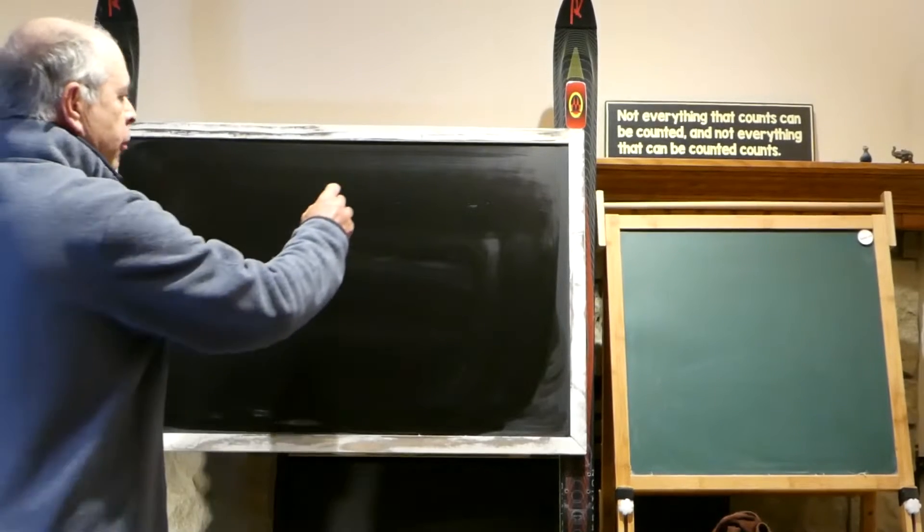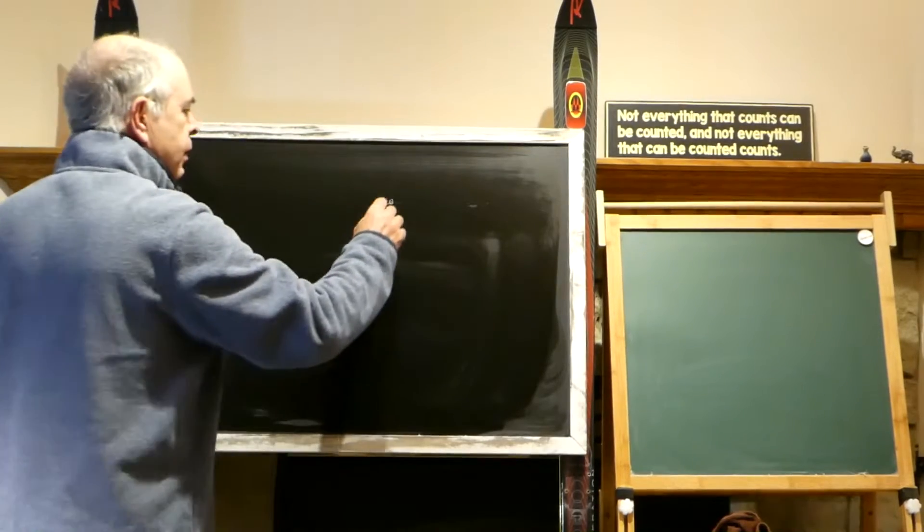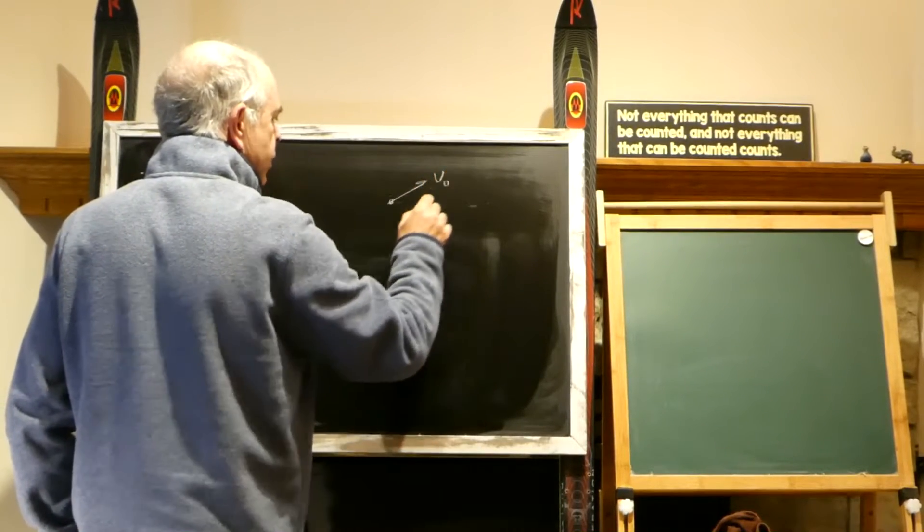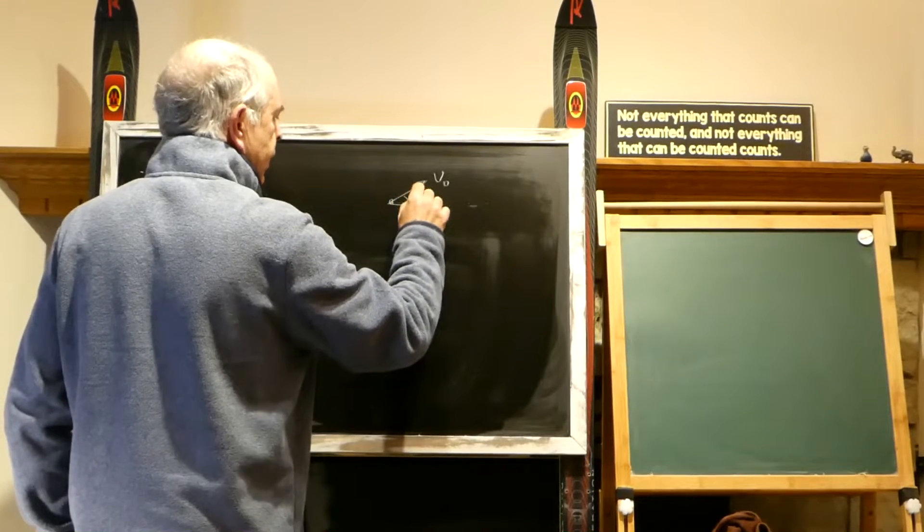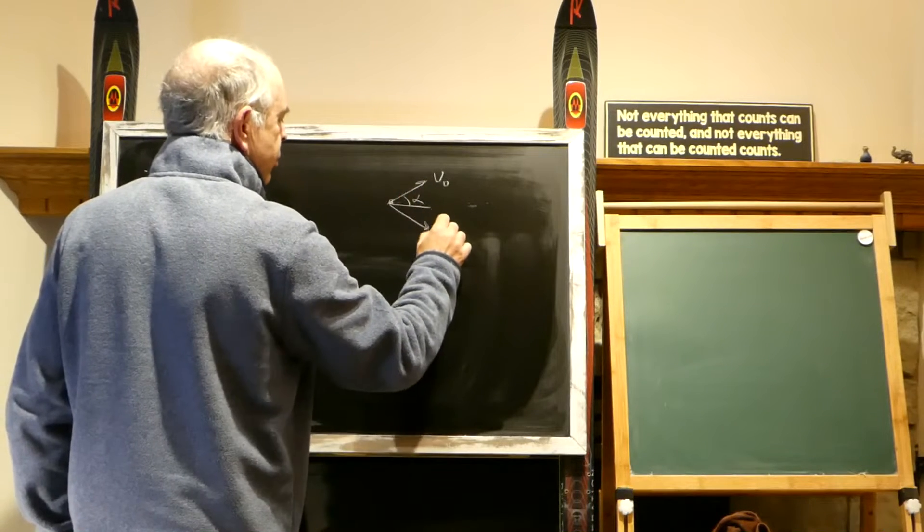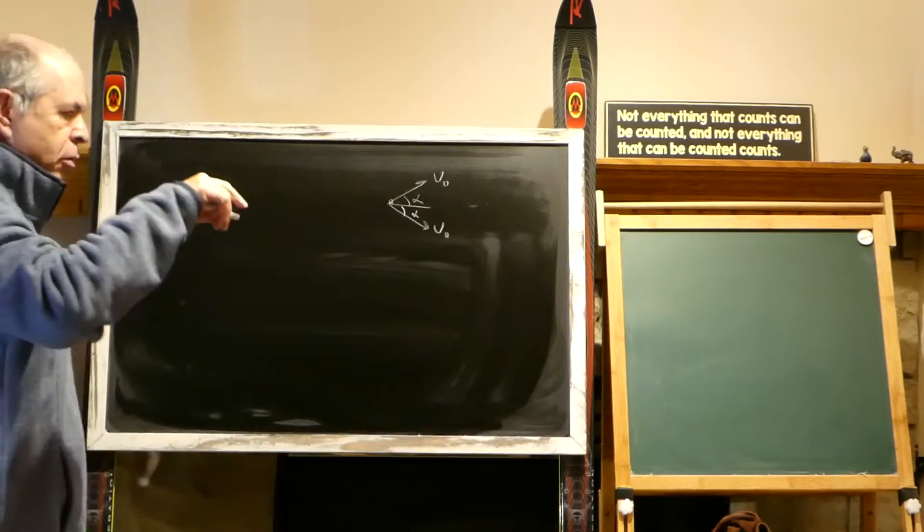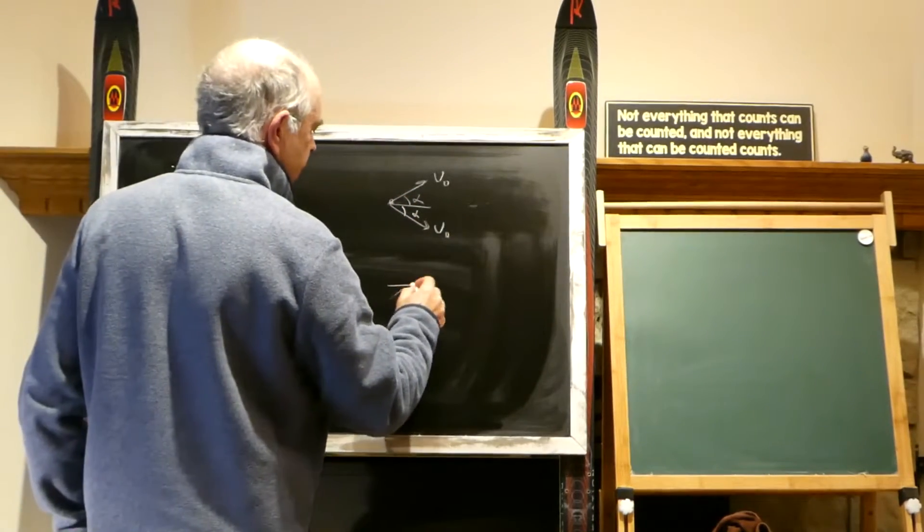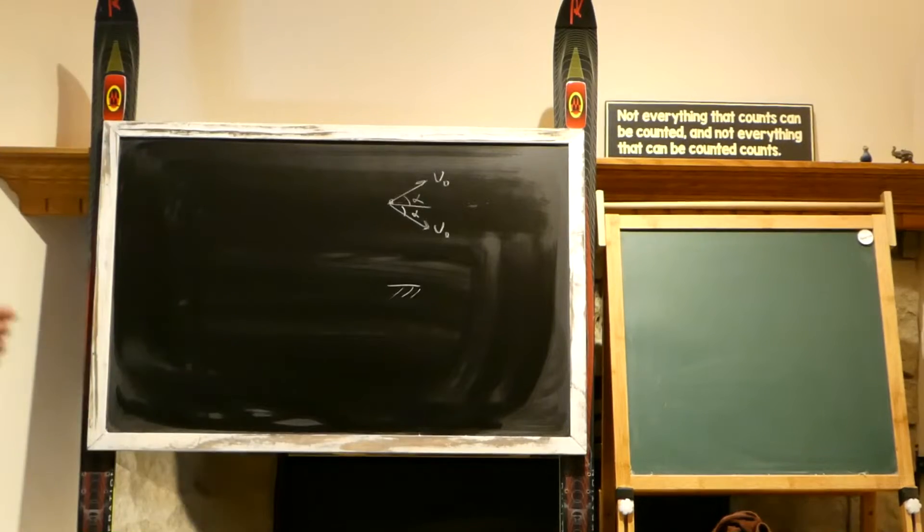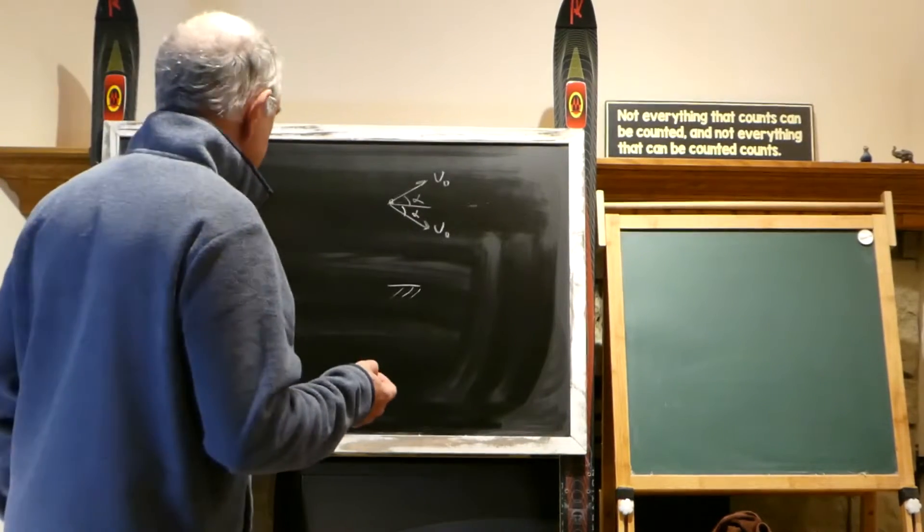Today's problem: we have two bodies. This is thrown with v0 under angle alpha and this is thrown with v0 under the same angle alpha but down, and this is somewhere here above the ground. They want us to find the relative speed.